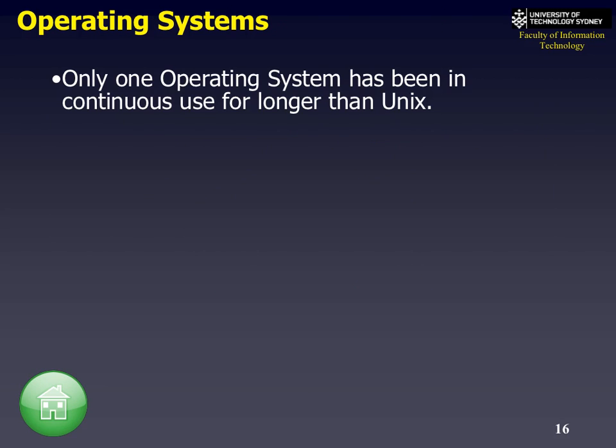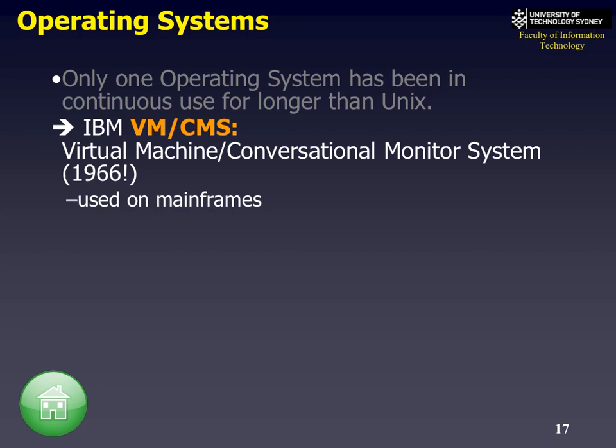There's only one operating system that's been around longer than Unix, and that was by IBM. It's called VM—one of the first operating systems dealt with in the commercial world. The really weird thing about VM is it's very much like your virtualized operating systems through VMware. The idea is you run virtual machines and an operating system on top of it. IBM even ran Unix under VM.